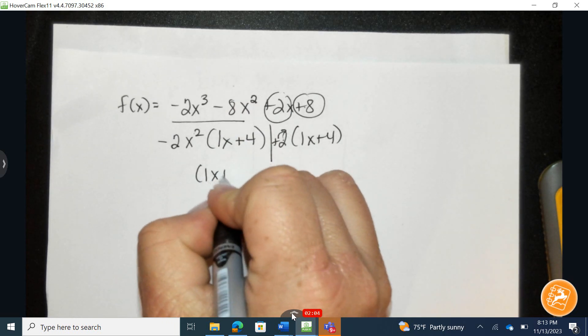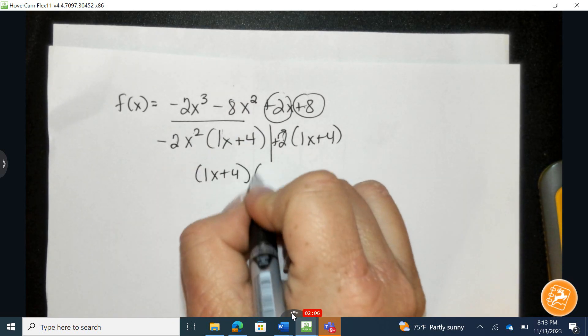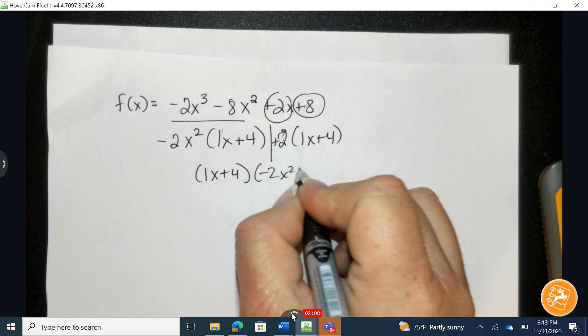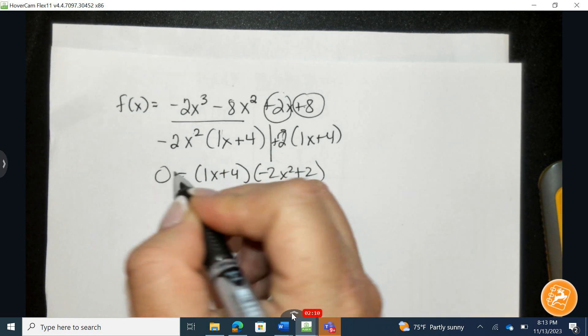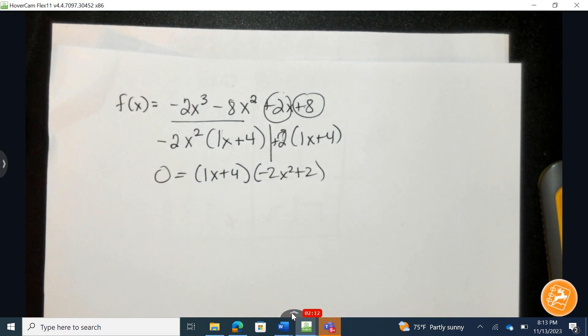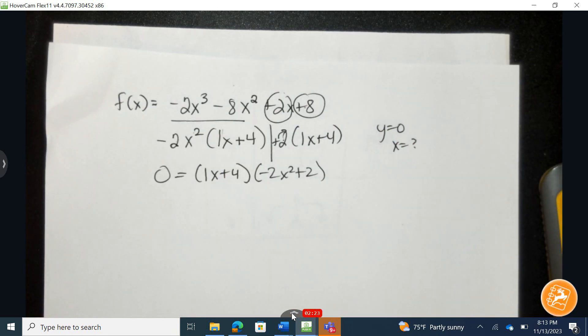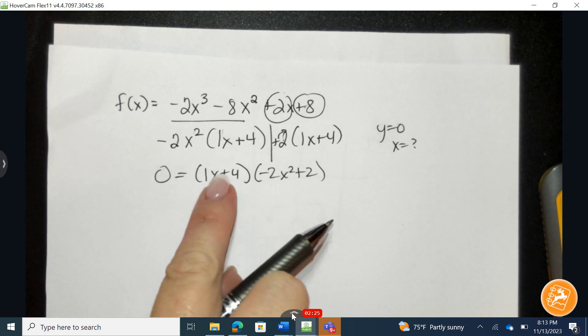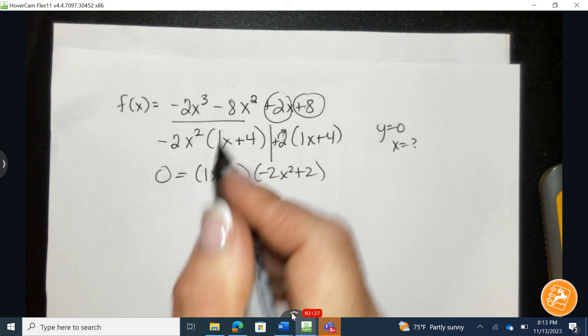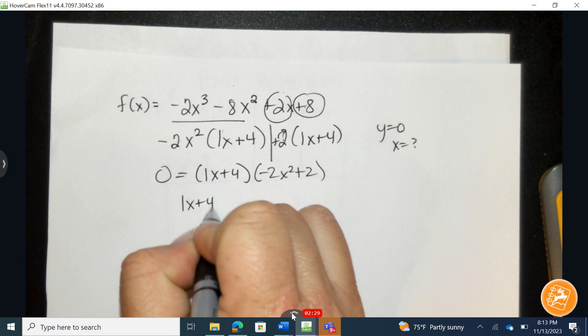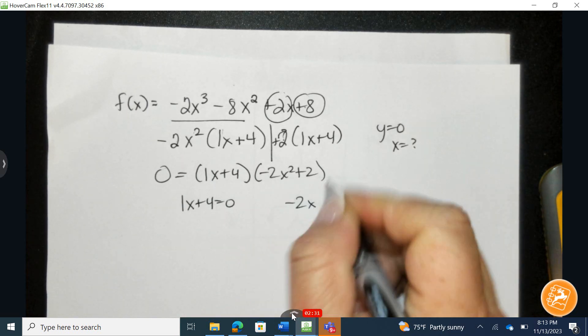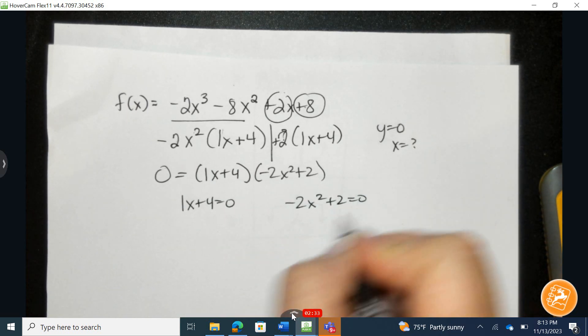They both contain a 1x plus 4. In front of the first is a negative 2x squared. In front of the back is a positive 2. Now, I'm going to set f of x equal to 0 because ultimately what I'm trying to do right now is I'm trying to solve this to find the x-intercepts. So I'm going to take each one of these quantities and set it equal to 0. 1x plus 4 equals 0, and negative 2x squared plus 2 equals 0.